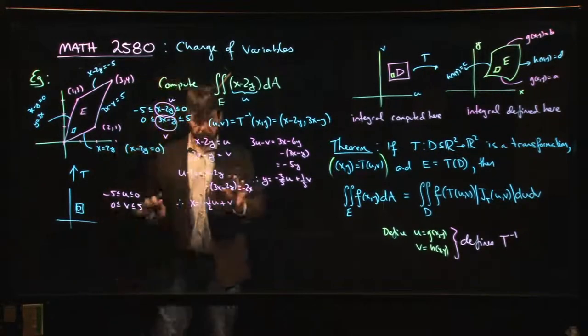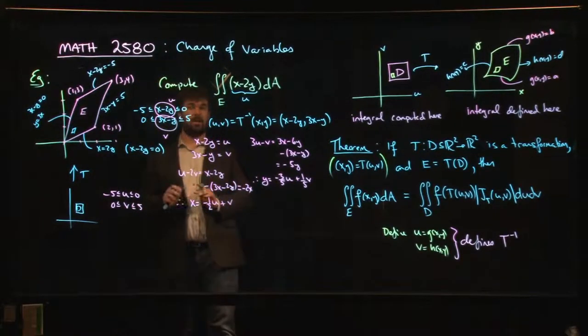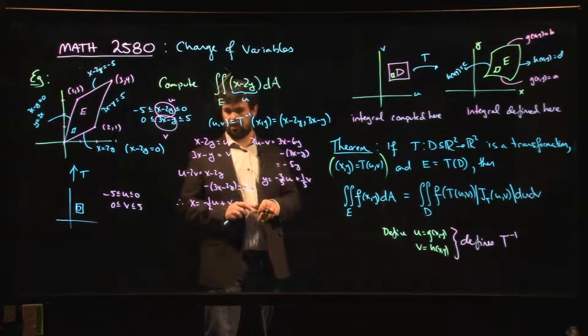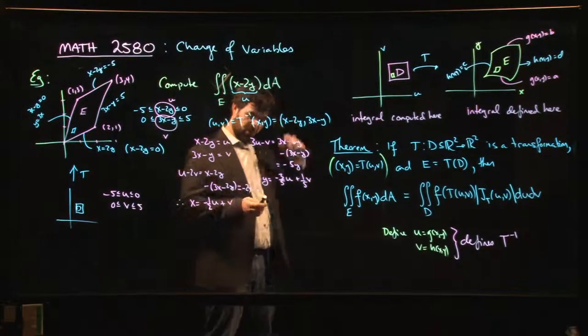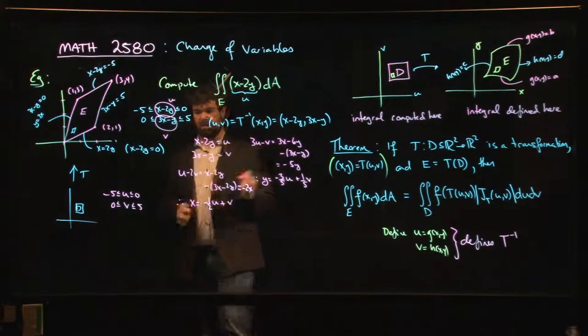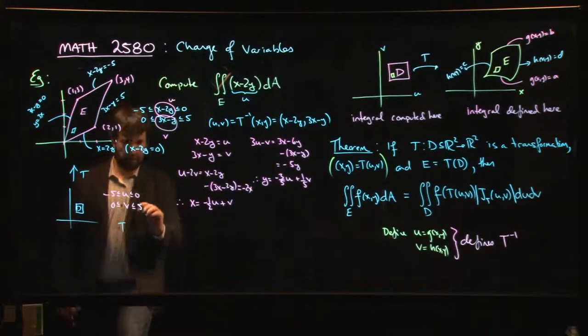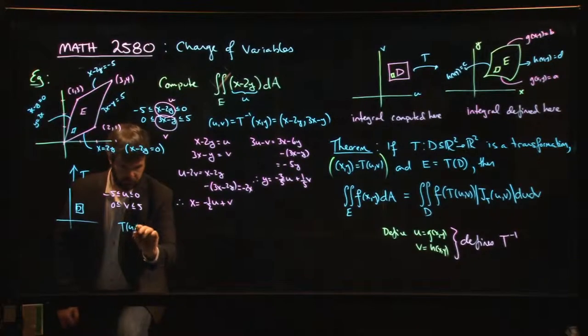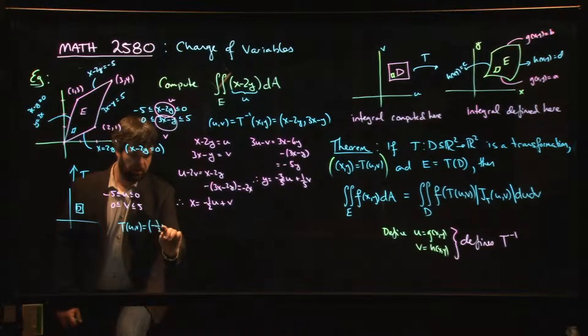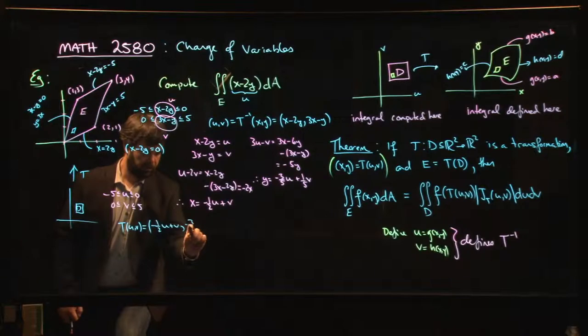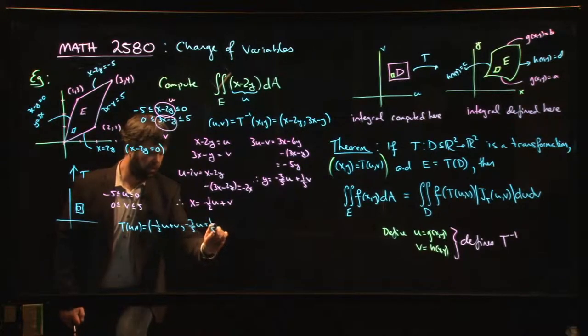So I can divide everything by minus 5, and I get that x is minus 1/5 u plus 2/5 v. So this gives me my transformation T of uv is given by minus 1/5 u plus 2/5 v, and then minus 3/5 u plus 1/5 v.